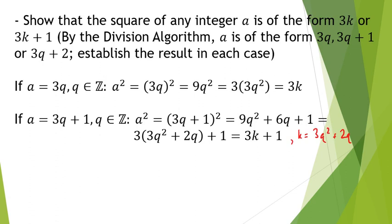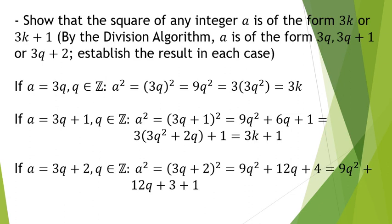So k equals 3q squared plus 2q, and we've shown a squared is 3 times some whole number plus 1, establishing our result for the second case where a is 3q plus 1. Moving on to our third and final case: a is of the form 3q plus 2, where q is some whole number. Squaring this gives 9q squared plus 12q plus 4. Now I'm going to do something a little bit odd — I'm going to break that 4 up purposely as 3 plus 1.